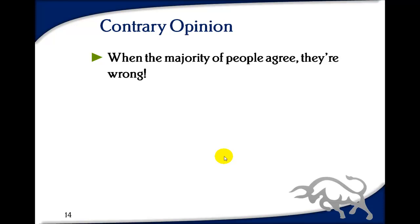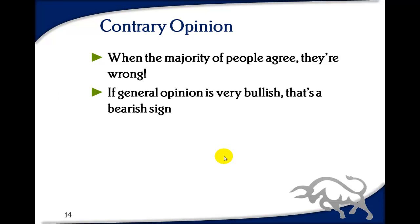Under contrary opinion: if the general opinion is that the market is very bullish, that's a bearish sign. If everyone's saying we're going to the stars, that's a bearish sign — it's a contrary view. You don't want to go along with the herd all the time. Conversely, if the market opinion is that it's a bearish market and it's gone toward the bottom and won't go further down, that might be a sign the market is going to turn.